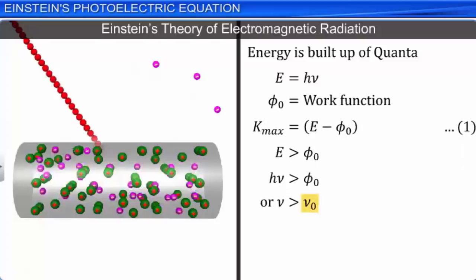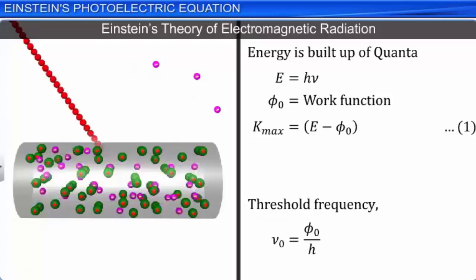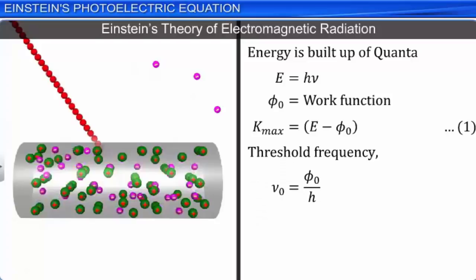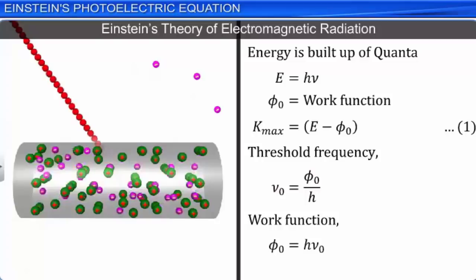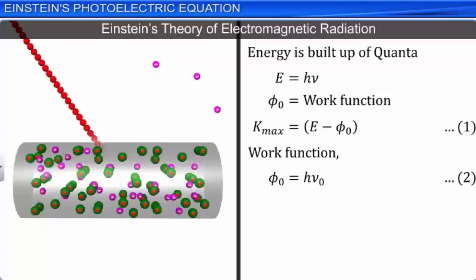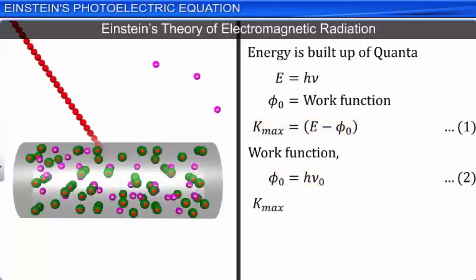Threshold frequency ν₀ is the minimum frequency of the incident radiation required to just cause photoelectric emission from a metal surface. Since ν₀ = φ₀/h, we have φ₀ = hν₀ — let this be equation 2. Substituting the value of φ₀ from equation 2 in equation 1, we have the maximum kinetic energy of ejected electrons: K_max = hν − hν₀ (since E = hν).